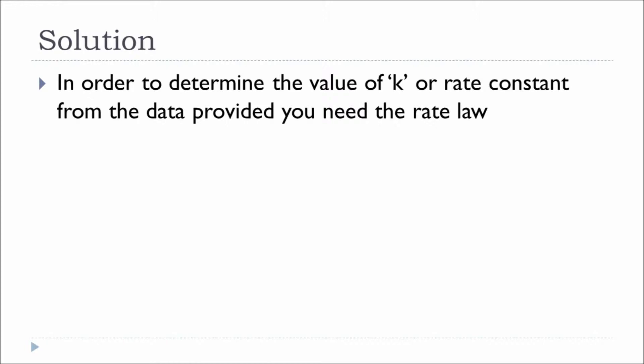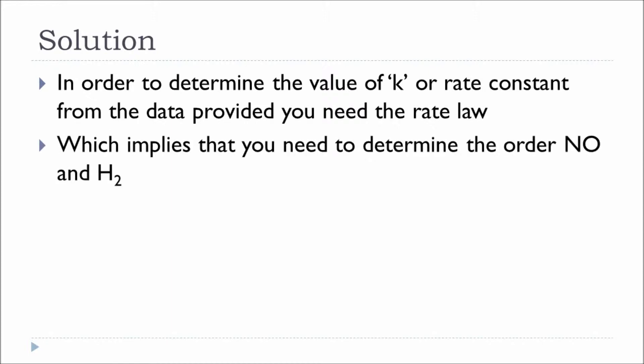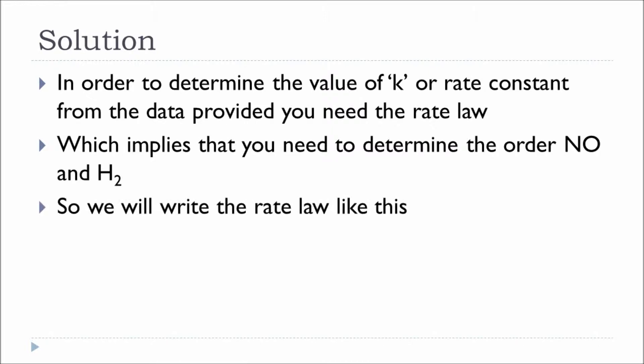In order to determine the value of k, or the rate constant, we need to be able to write the rate law. And in order to write the rate law, we need the order of each of the reactants. So we are going to write the rate law in a generic form: Rate = k[NO]^x[H₂]^y, where x represents the order of nitric oxide and y represents the order of hydrogen. We need to solve for x and y based on the experiments conducted.